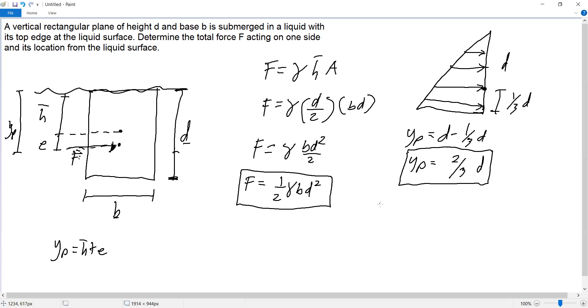Or if we solve using the derived formula, this e is equal to the moment of inertia, the centroidal moment of inertia of the cross-section, divided by y bar times area. y bar is h bar. So what is the moment of inertia of the rectangle? It's just BD cubed over 12. Then h bar is D over 2 times the area which is BD.